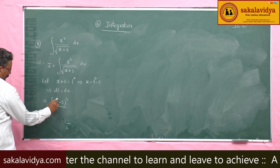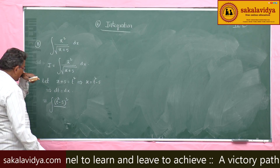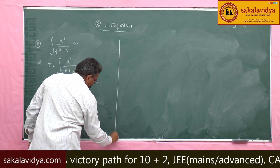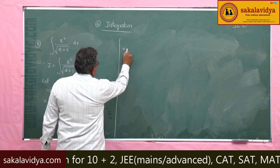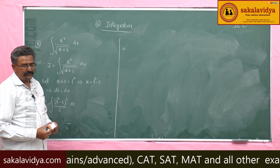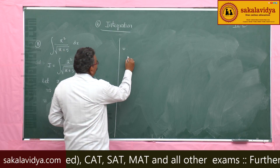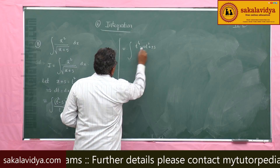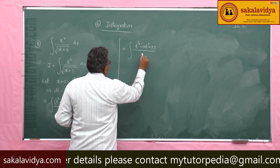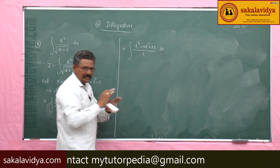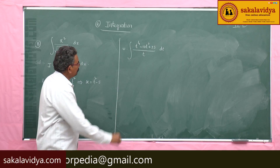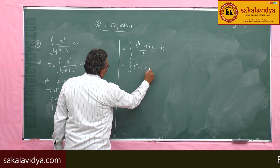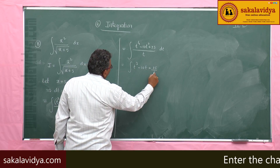Substituting, x² becomes (t − φ)², and √(x + φ) becomes t, and dx becomes dt. So we get the integral of (t − φ)² / t · dt, which expands to (t² − 2φt + φ²) / t · dt. Separating terms, this is the integral of (t³ − 10t + 25/t) dt — more precisely t² − 2φt + φ² divided by t.